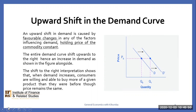We've mentioned that the demand curve can either shift upward or downwards. Let's start with an upward shift in the demand curve. An upward shift in demand curve is caused by favourable changes in any of the factors influencing demand, holding price of the commodity constant. When this happens, the entire demand curve shifts upward to the right, showing an increase in demand as shown in the alongside figure. The shift to the right is interpreted to show that as demand increases, consumers are willing to buy more of a given product than they were buying before, though the price has remained constant.